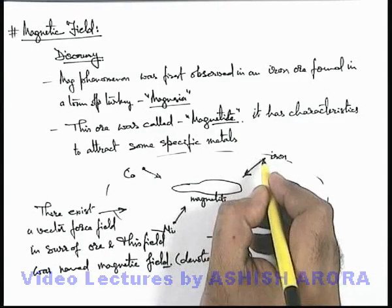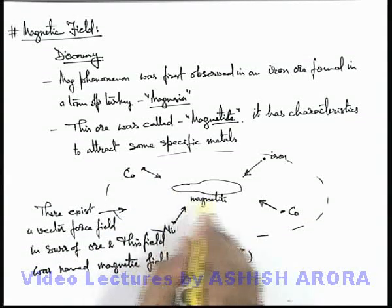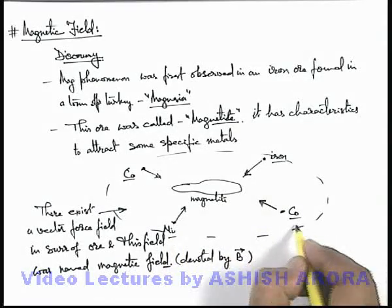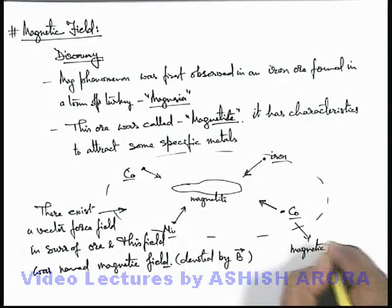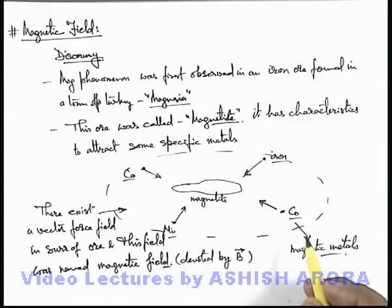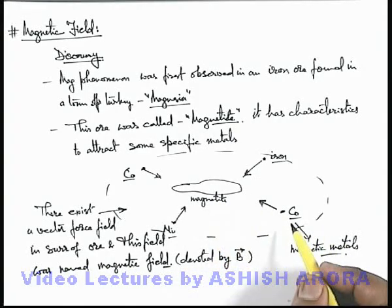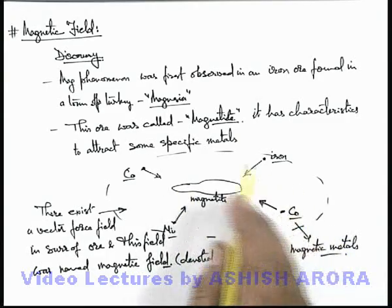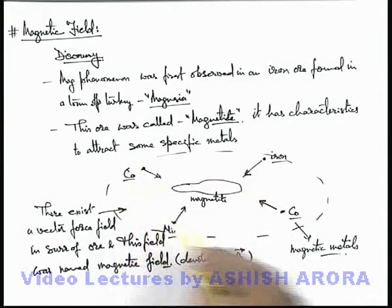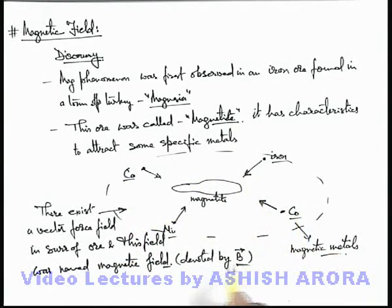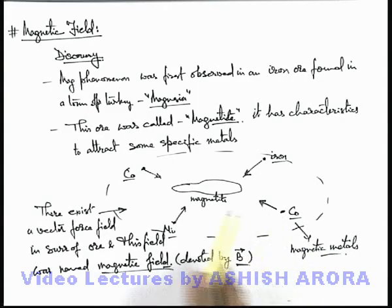These specific metal particles or metals which are attracted by the magnetite ore are basically categorized as magnetic metals. And other metals which are not attracted by this magnetite ore are termed as non-magnetic metals. So this magnetite ore produces a vector field in the region in its surrounding, which is denoted by B vector and is termed as magnetic field, which has characteristics to attract magnetic metals toward it. And nowadays, the kind of bar magnets we are using are basically some specific forms of this magnetite ore which produces B vector in the surrounding.